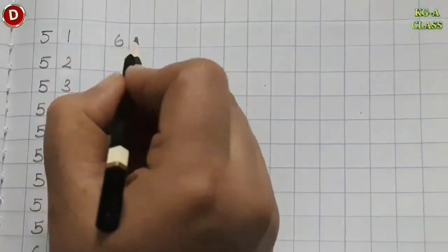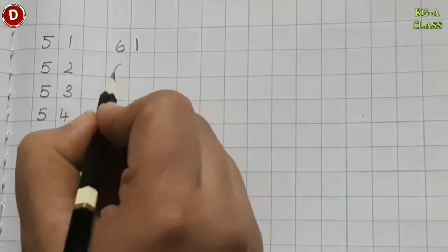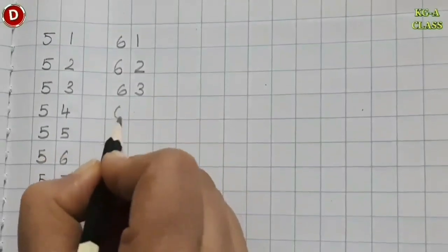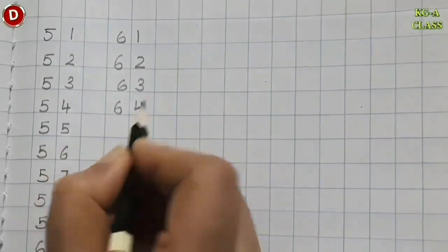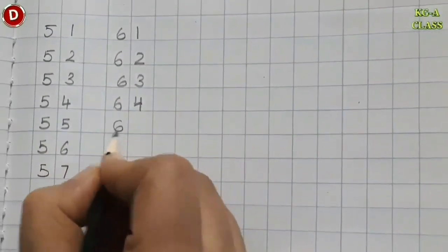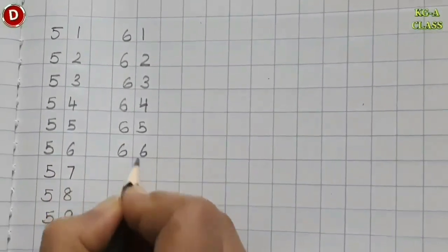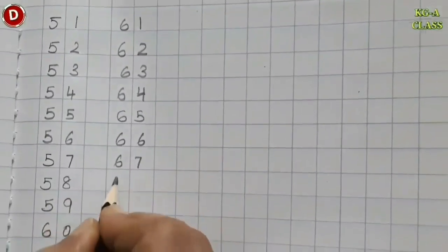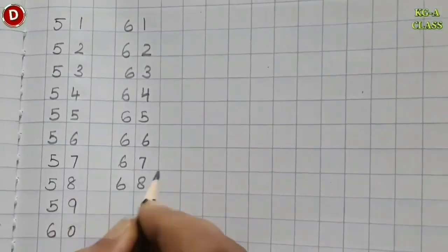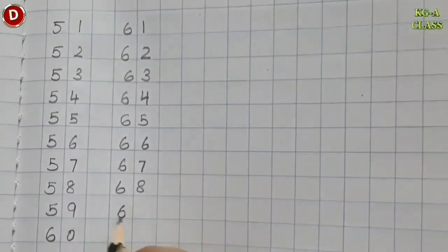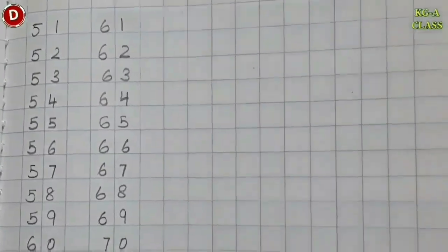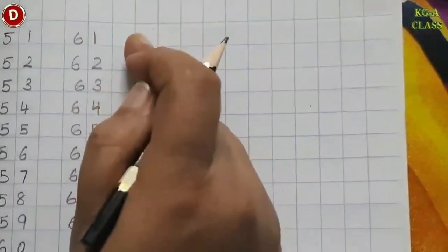Then comes 61, 62, 63, 64, 65, 66, 67, 68, 69 and then 70. After writing 70, leave the next line.